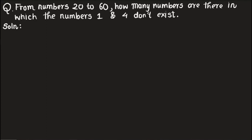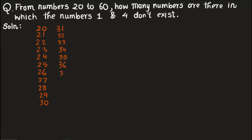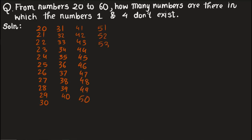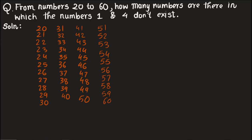The next question asks: from numbers twenty to sixty, how many numbers are there in which the digits one and four do not appear? This is a tricky question. Since it says 'from,' we include twenty and sixty. Let us write all the numbers from twenty to sixty and then cross out any that contain the digit one or four.